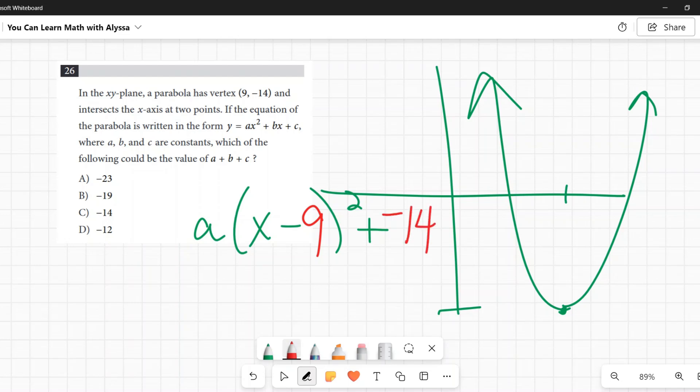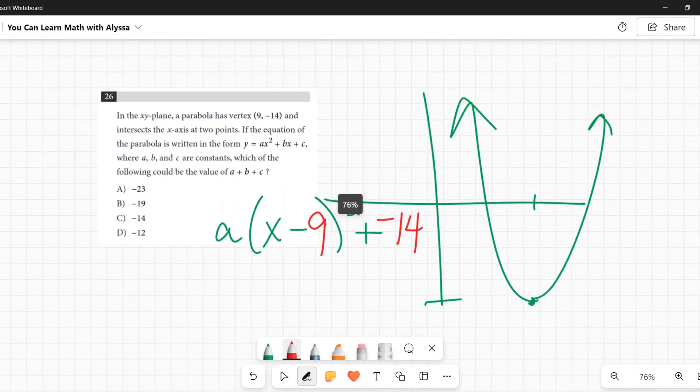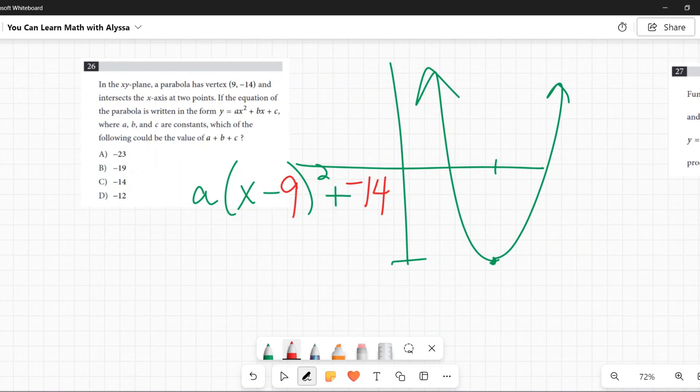And now I'm going to expand this. I'm going to expand this parabola so we can get to something that looks like this, the ax-squared plus bx plus c. So first, and let me scoot that little 27 out of the way.